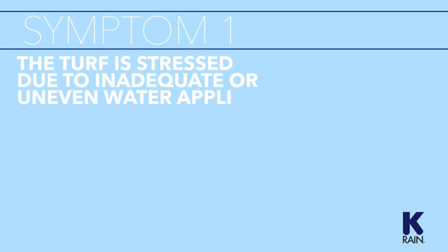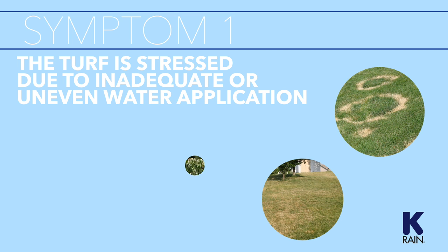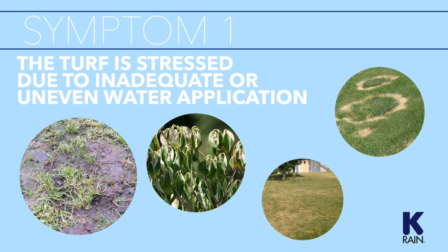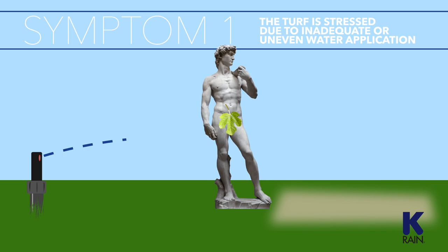Symptom number one: the turf is stressed due to inadequate or uneven water application. This can take the form of rings, dry areas, stressed plants, and other evidence of patchy water application. If the turf is stressed, something is preventing the water from reaching its destination as it was designed to do. The first thing to check for are physical obstacles that might be getting in the way of the water.